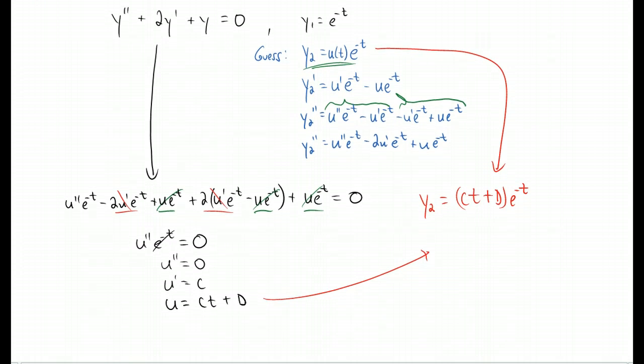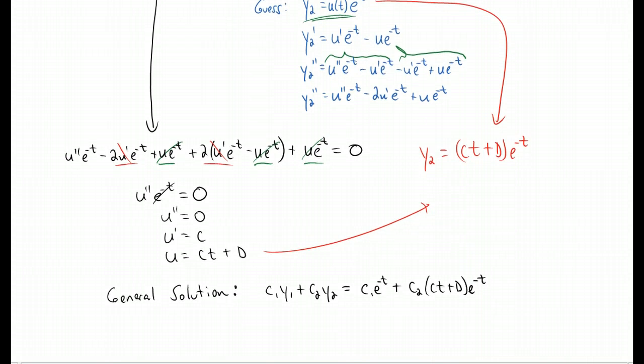I'm going to write down the general solution. You know by now that the general solution looks like c1 y1 plus c2 y2, and that looks like this. Okay, so this is our general solution here, but it's got a lot of constants floating around in it, doesn't it?